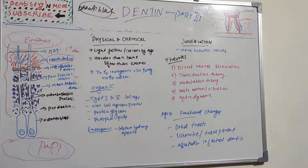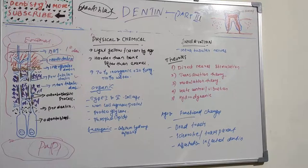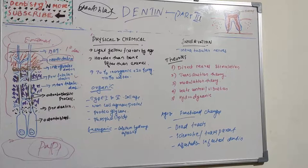Dentine is light yellowish in color and becomes darker with age. It is harder than bone but considerably softer than enamel, and has a lower content of mineral salts, which renders it more radiolucent than enamel. In radiography, radiolucent appears blacker while radiopaque appears whiter.